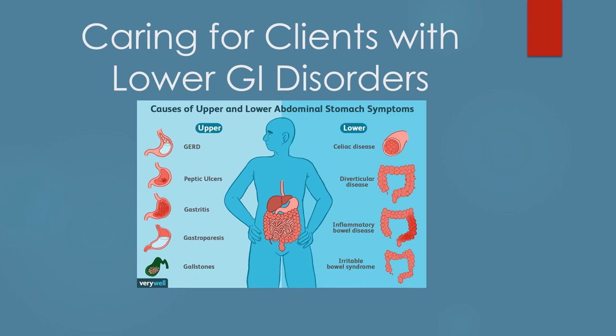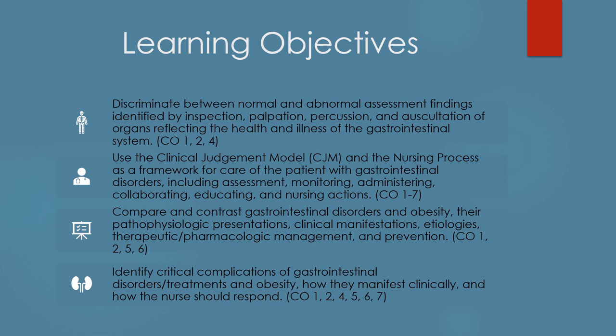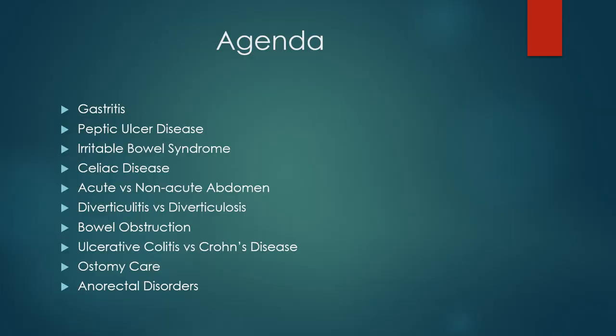Hi class. We just talked about caring for clients with upper GI disorders and now we're going to go into caring for the client with lower GI disorders. Here are those learning objectives, and this is our agenda for today. We're going to be talking about gastritis, peptic ulcer disease, irritable bowel syndrome, celiac, acute versus non-acute abdomen, diverticulitis versus diverticulosis, bowel obstruction, ulcerative colitis versus Crohn's disease, and ostomy care and anorectal disorders.